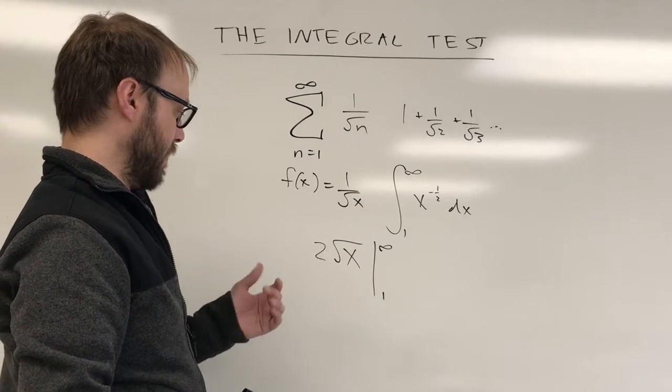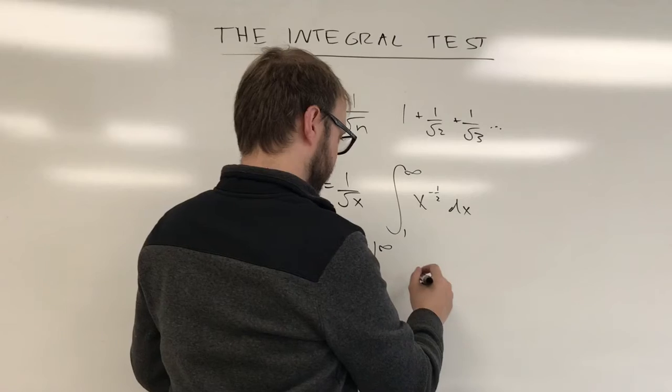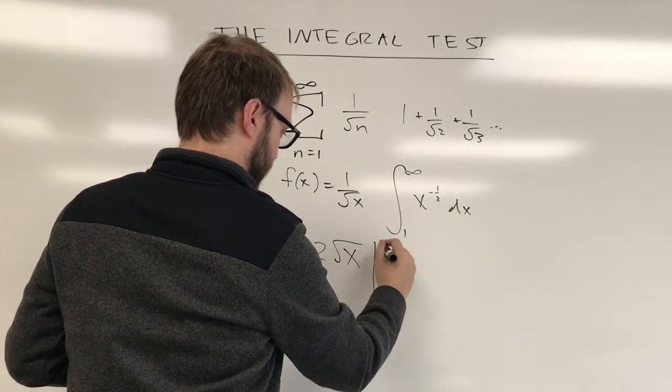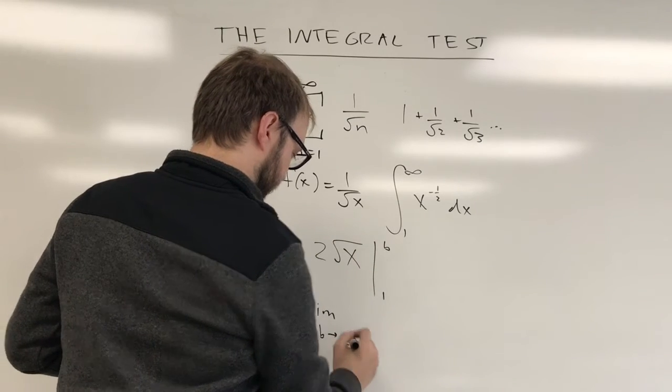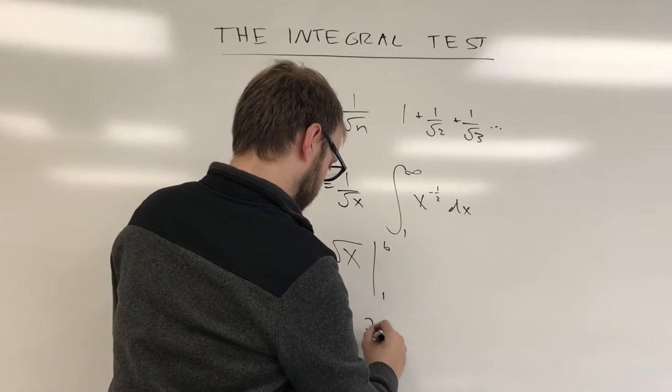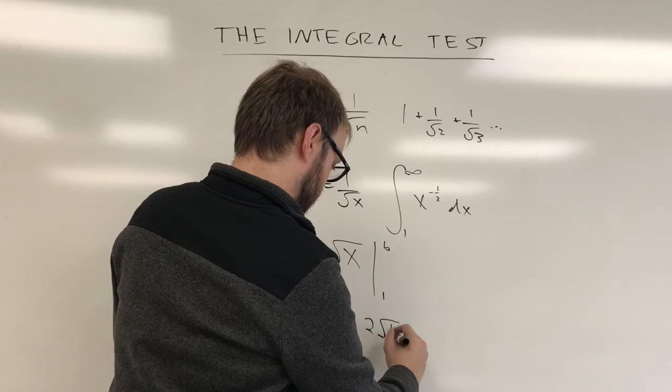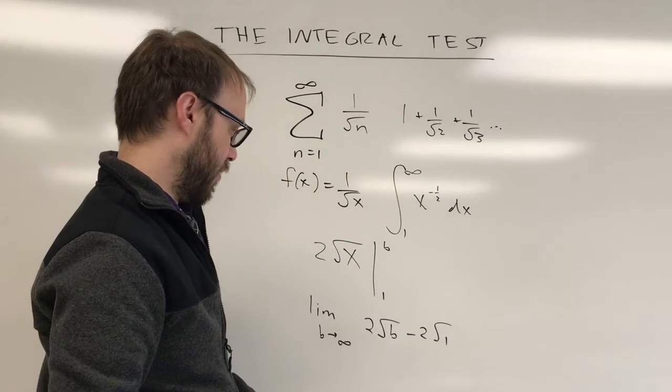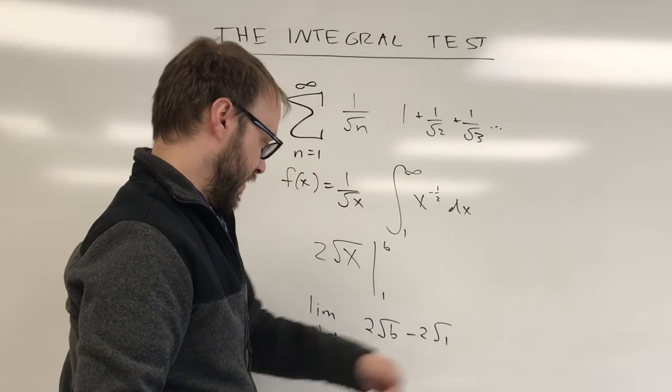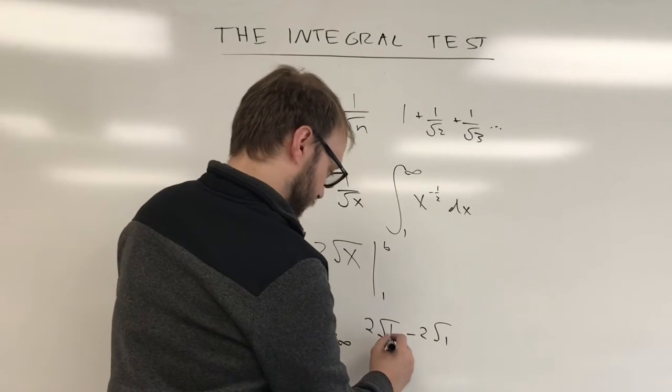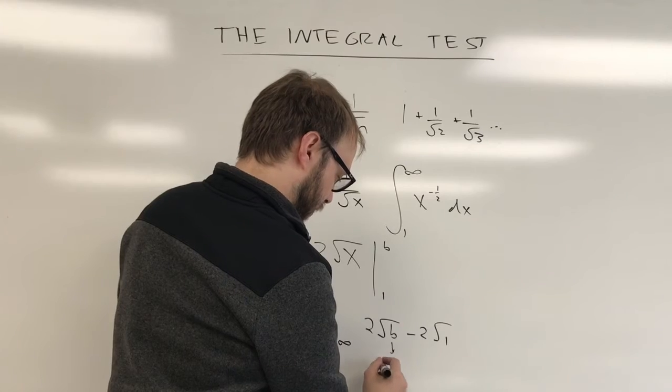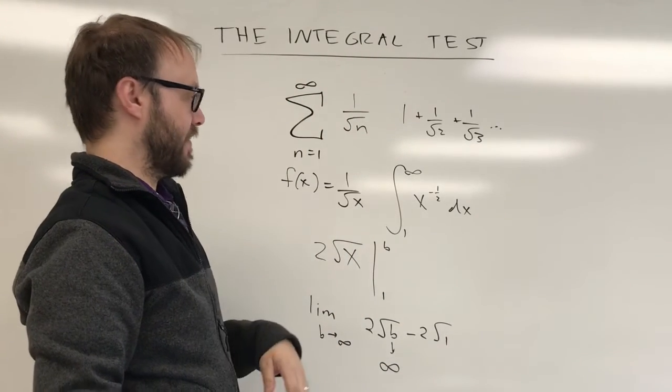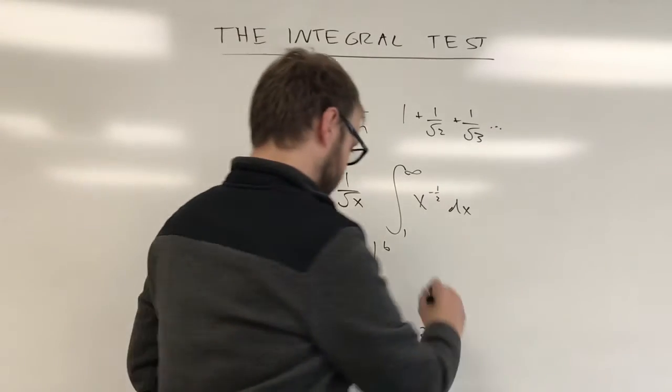And so we'll substitute that in and we'll see what ends up happening here. So in this particular case, this is going to end up being the limit. Really, we should call that infinity b. The limit as b approaches infinity of 2 radical b minus 2 radical 1. And of course, that's just a constant value. As b approaches infinity, this whole thing is going to approach infinity.